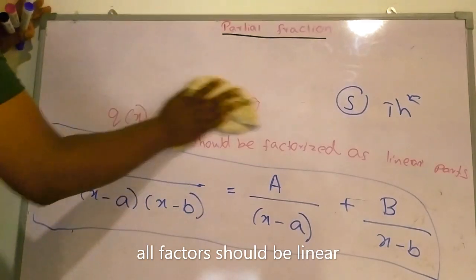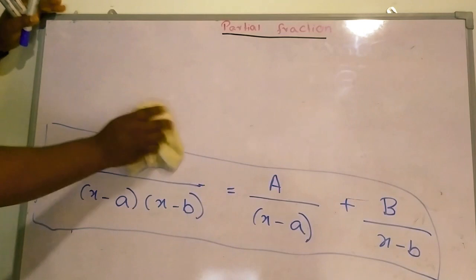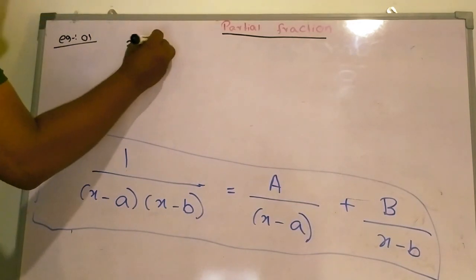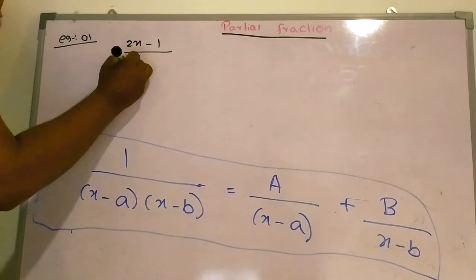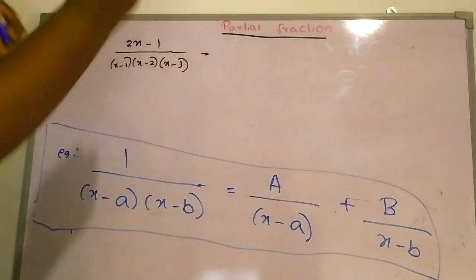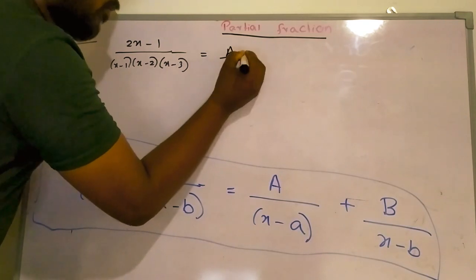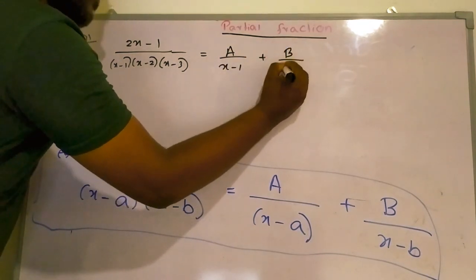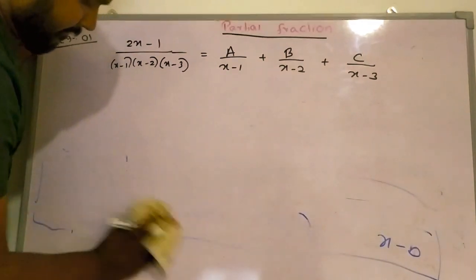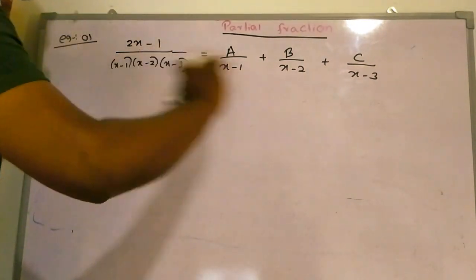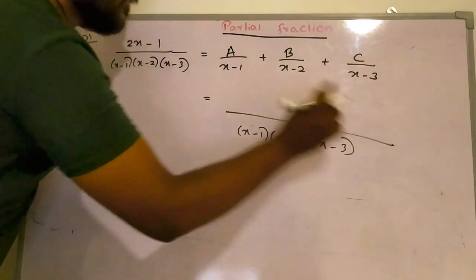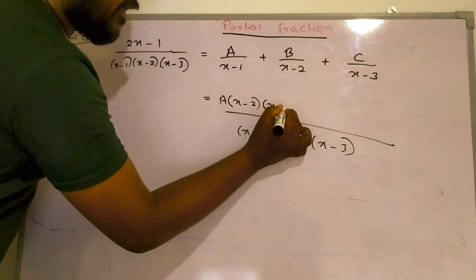Now I am going to discuss an example. Example number 1: (2x minus 1) over (x minus 1)(x minus 2)(x minus 3). According to the theorem, you can write it as A over (x minus 1) plus B over (x minus 2) plus C over (x minus 3). Now I am going to take a common denominator of the right-hand side: (x minus 1)(x minus 2)(x minus 3). A should be multiplied by (x minus 2)(x minus 3).